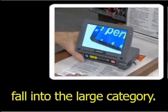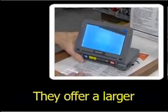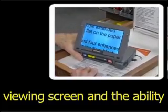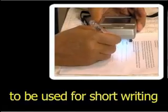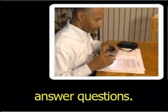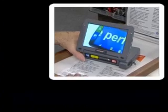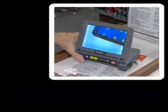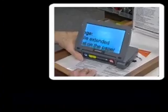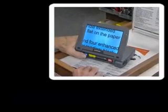The units shown here fall into the large category. They offer a larger viewing screen and the ability to be used for short writing tasks, such as writing a check or completing short answer questions. One unit scans a sheet while its enlarged image is displayed on a screen that angles up from the scanner portion.